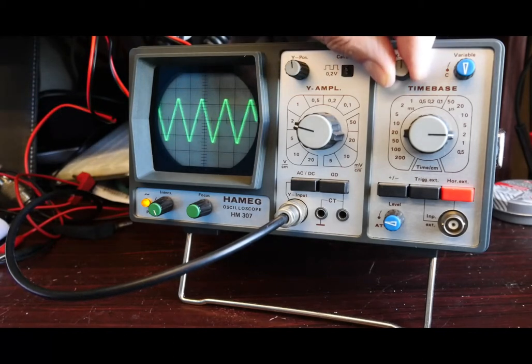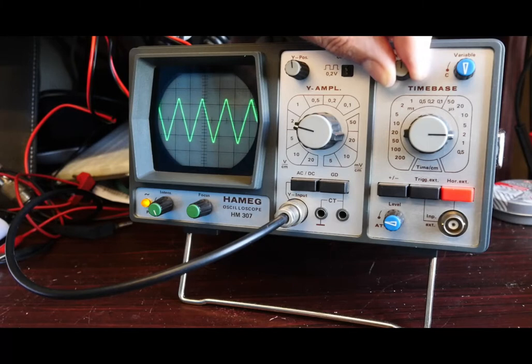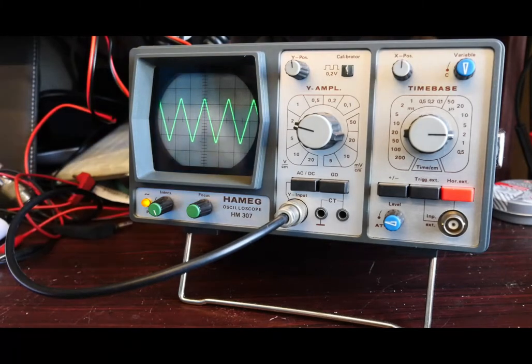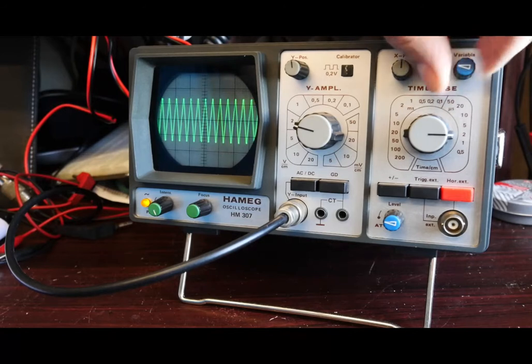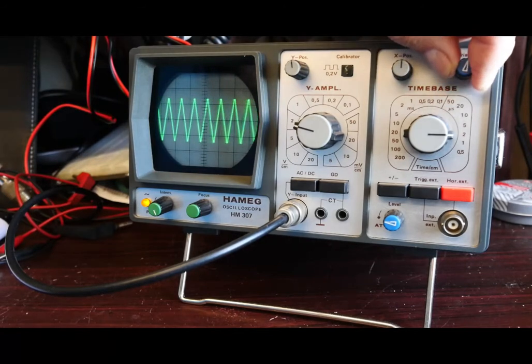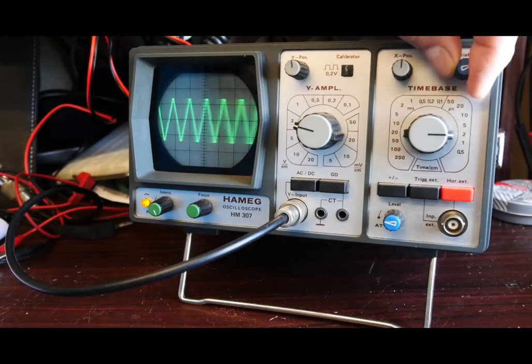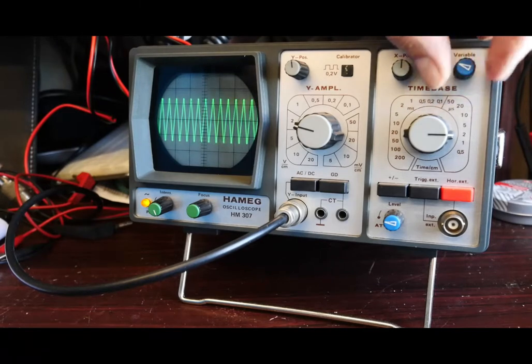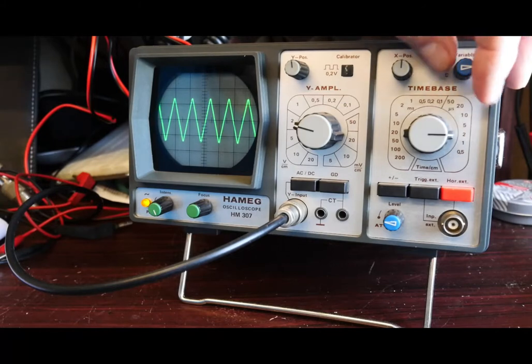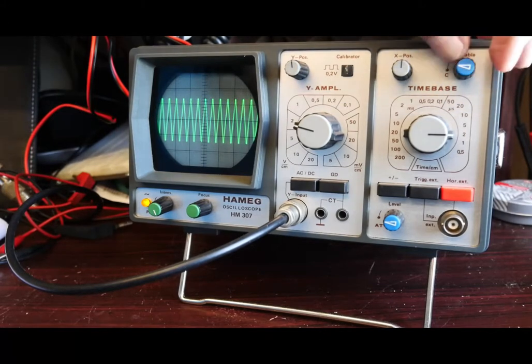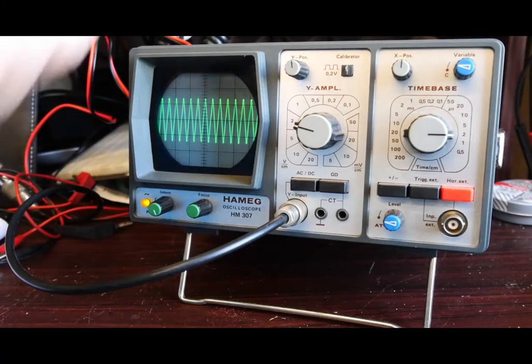This allows us to position the waveform from an X point of view. We can actually come off the variable time base if we want to, and we can extend it. Obviously it ceases to be calibrated with the time per division at that point, but if we come back to the click stop at the end, it's back to its conventional size.